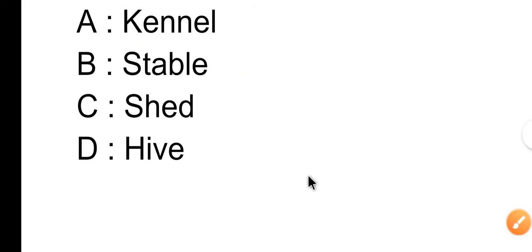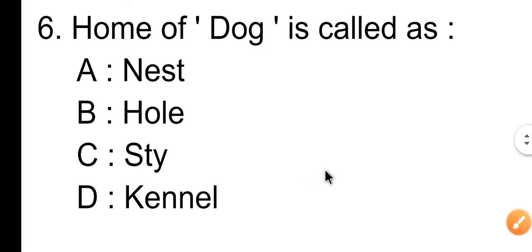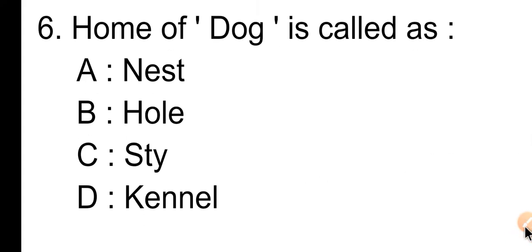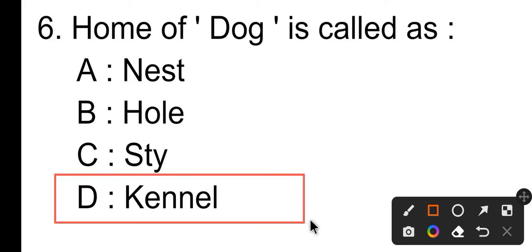Question number six: the home of dog is called as — Option A is nest, Option B is hole, Option C is stye, Option D is kennel. Option D is the correct answer.